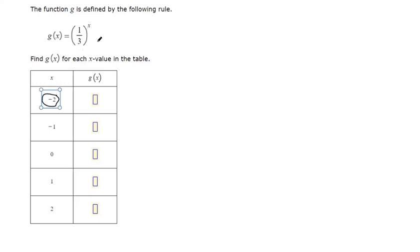So they're asking us to plug in negative 2 for x. So if we do that, it looks like this. And so to figure this out without converting it to a decimal, that negative 2 can become an exponent on top of both of these.